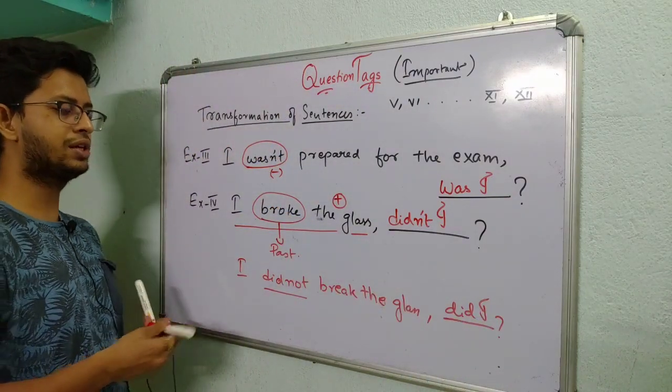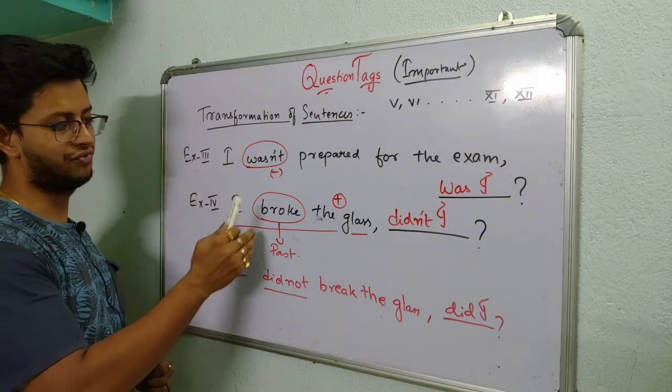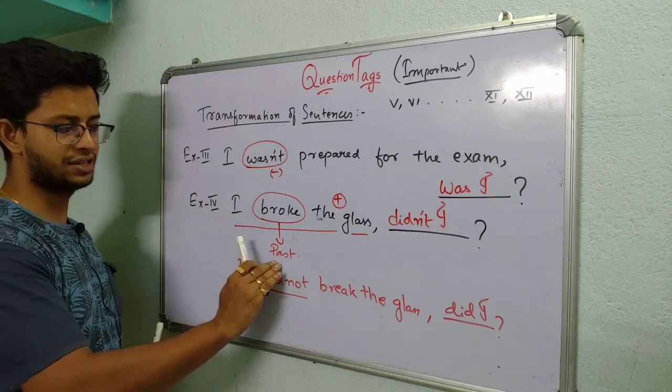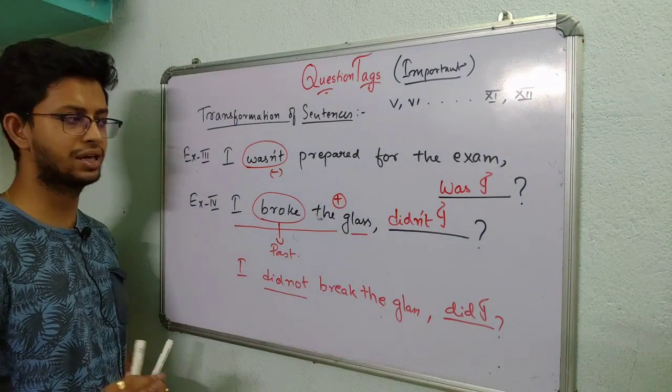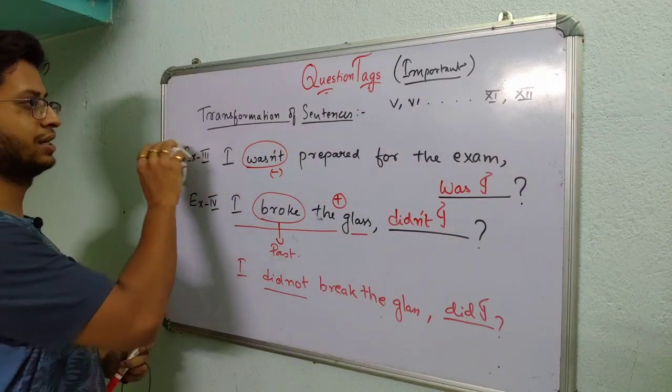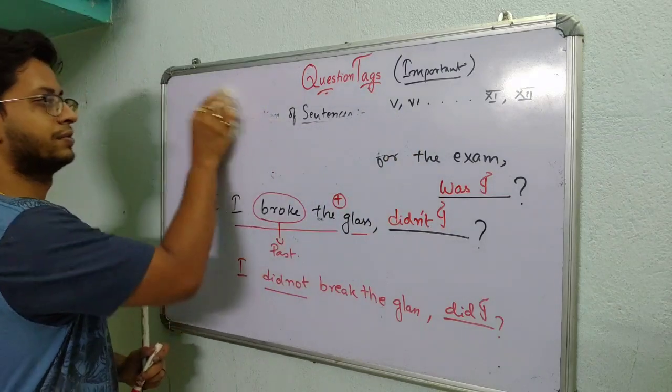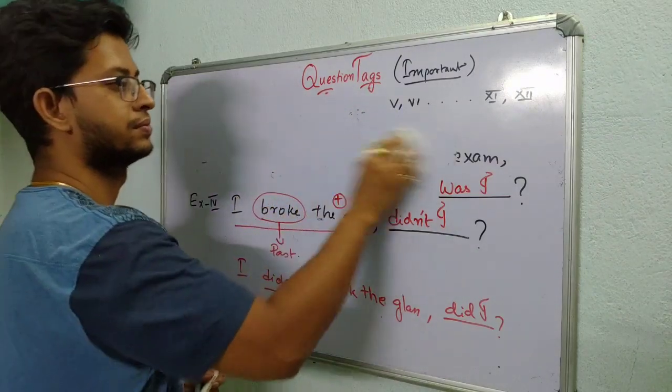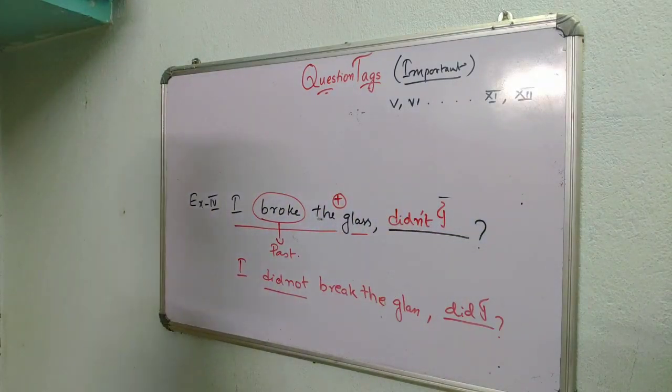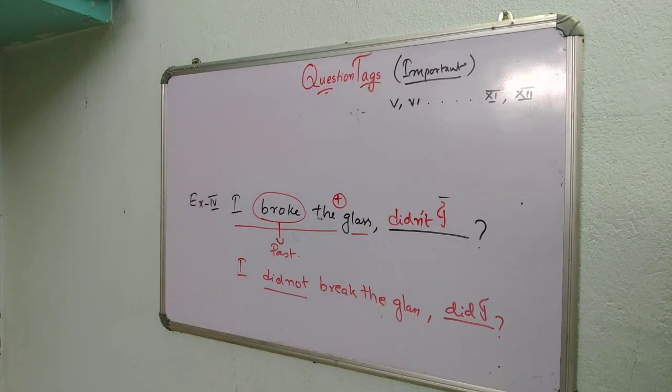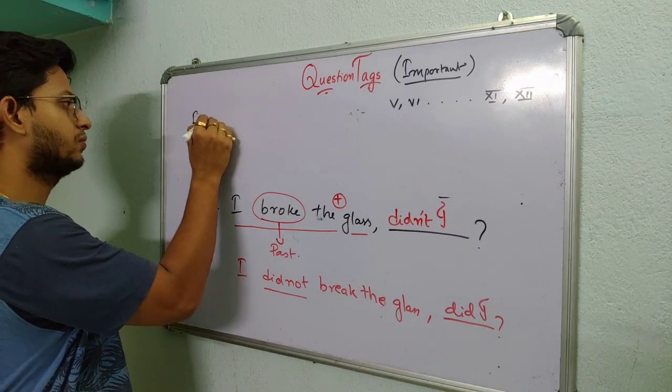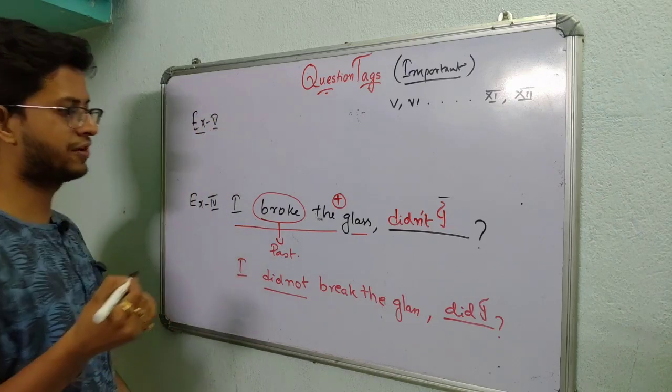Suppose this sentence was like: I did not break the glass. Then you have to see whether the given verb is in present or past. If it's in present then I will solve one example for that thing. If it's in past then you have to use didn't I. So let's take the case of present. If we understand that together, then it will be easy for us.